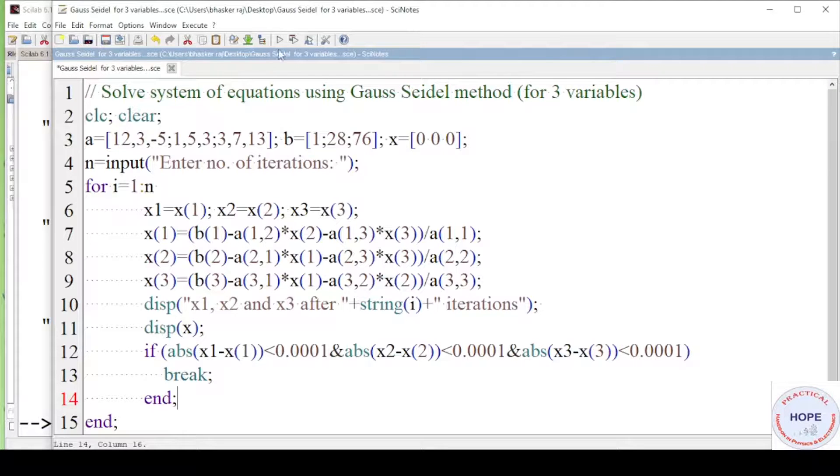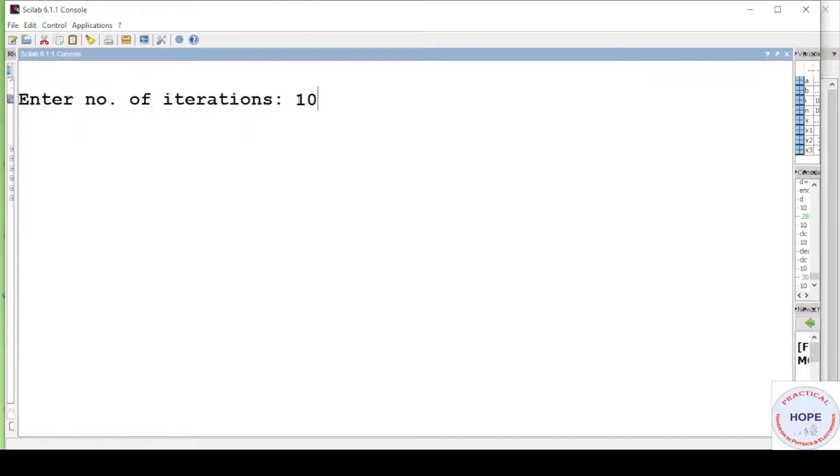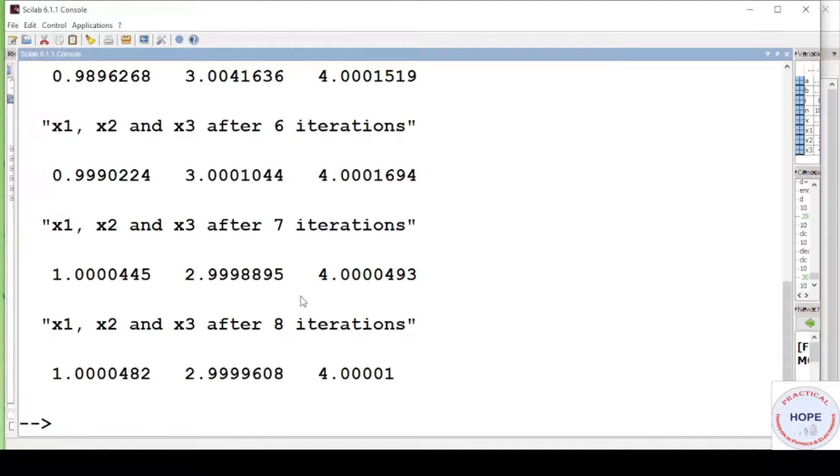Execute it. Say number of iterations 10. Press enter. Now you can see the program has stopped after 8 iterations only because the difference between the previous and present values of x of all the values of x is less than 0.0001. You can give 10 iterations, 50 iterations but it will stop after 8 iterations only.